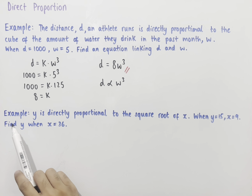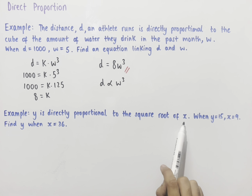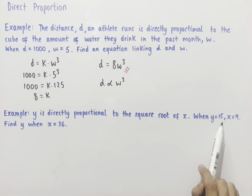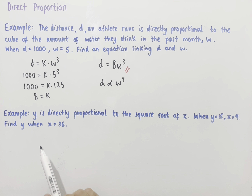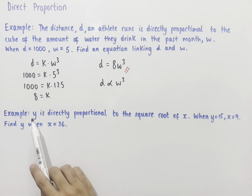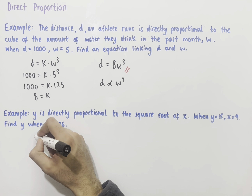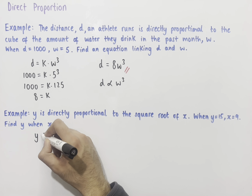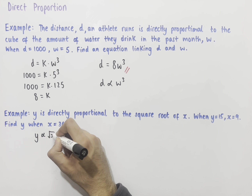The next example says: y is directly proportional to the square root of x. When y equals 15, x equals 9 — find y when x equals 36. We'll first write down the relationship between y and the square root of x using the proportional symbol: y is directly proportional to the square root of x.